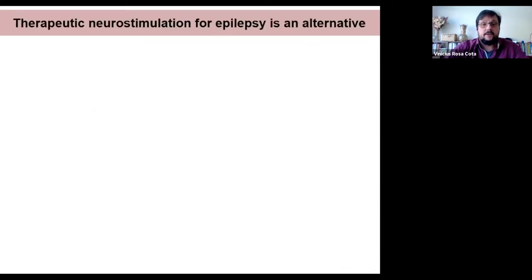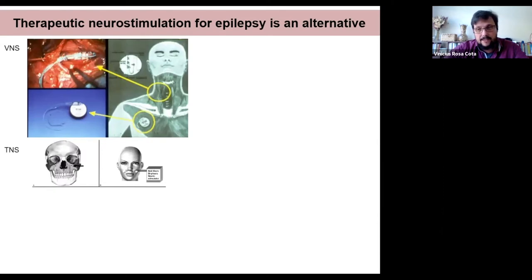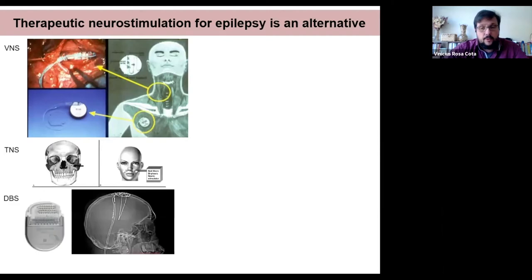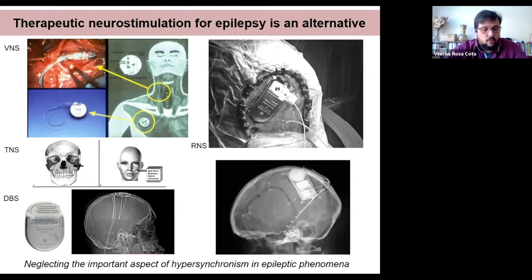Of course, there is an alternative with therapeutic nerve stimulation. You're probably aware of these techniques. We have, for instance, vagus nerve stimulation, or trigeminal nerve stimulation, which is less invasive regarding cardiovascular function. We have deep brain stimulation for epilepsy, and also probably the state of the art, which would be responsive neural stimulation, which is a closed-loop system. These technologies are in different stages of development. Some are already approved by FDA and other regulatory agencies across the world, Brazil included.